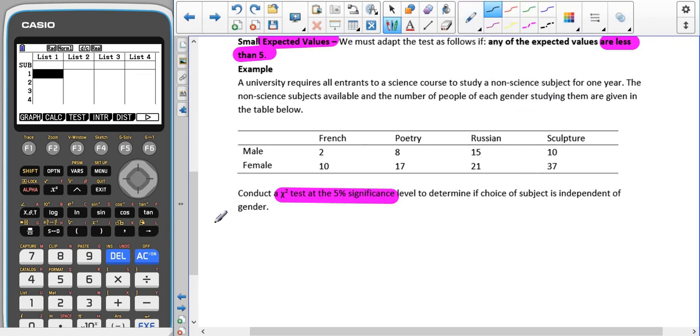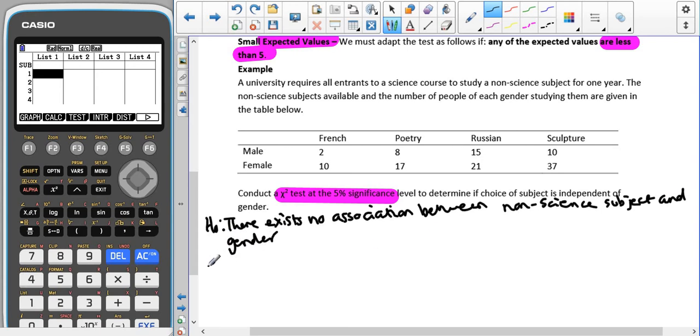As we have done in the other parts of the chi-squared test, our H-naught is going to be there exists no association between non-science subjects and gender, and our H-1 is going to be there exists an association between non-science subjects and gender.